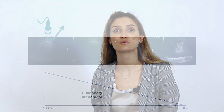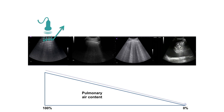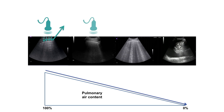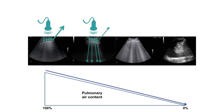When the pulmonary air content decreases and the lung becomes more dense, the acoustic mismatch between the pulmonary tissue and the chest wall also decreases, allowing the ultrasound beam to partially penetrate below the pleural line.